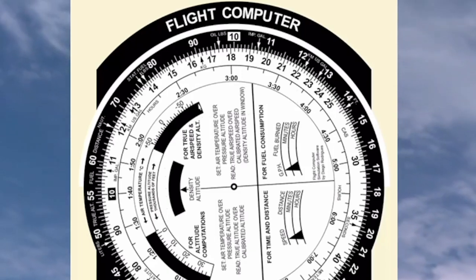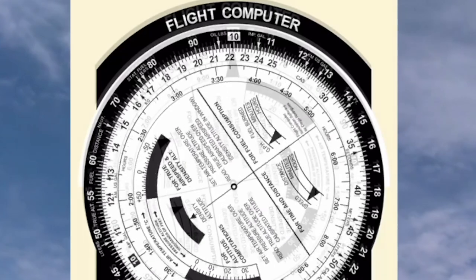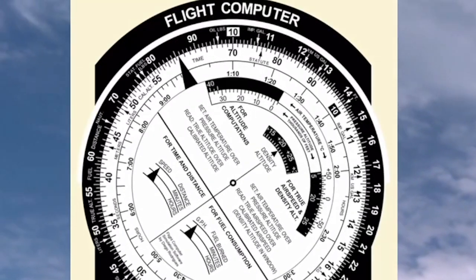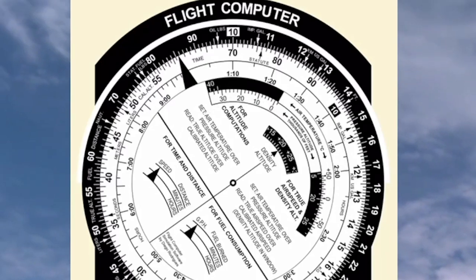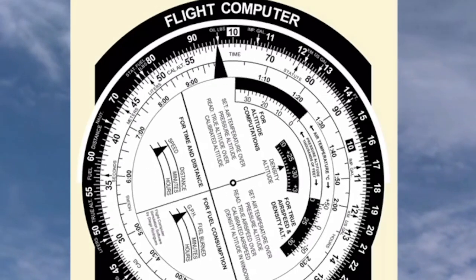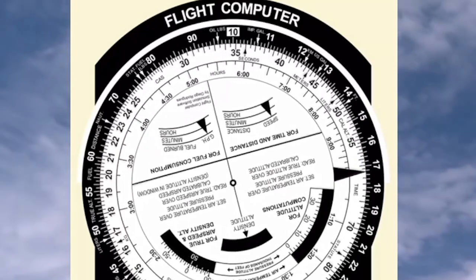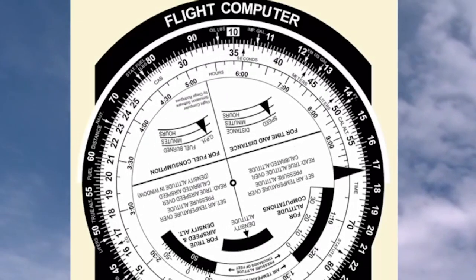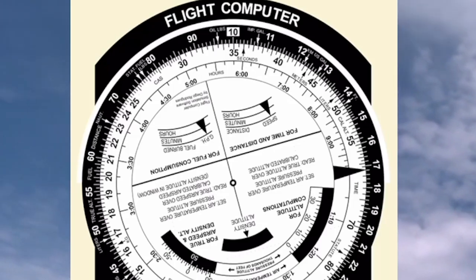To divide using this, we can easily just reverse the procedures. We're going to take 70 and divide it by 2. We would take the 70, bring that over to where the 2 is, and then read under the index at 12 o'clock. And as you see, the answer will be 35.